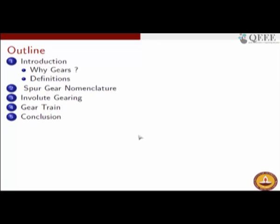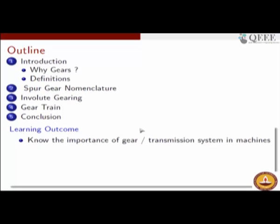At the introduction we will talk about why we need gears in the first place — some motivation as to why gears form a very important machine element for different applications and why gears find such all-pervasive applications in engineering today. We will then dissect out different parts of the gears and introduce the terms and terminologies associated with spur gears. The spur gear nomenclature will be elaborated today. Next session we will talk about involute gearing, and the final session will cover gear trains.